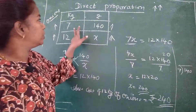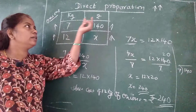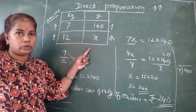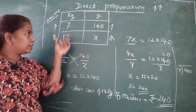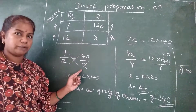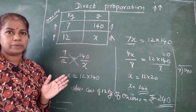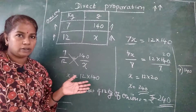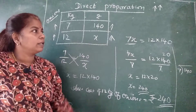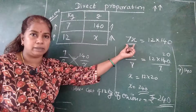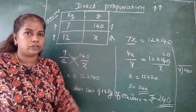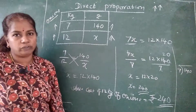What I did: first I made a table with columns for kg and rupees — 7 kg, 140 rupees, 12 kg, x. Then we wrote as it is because it is direct proportion: 7 upon 12 equals 140 upon x. Then cross multiplication: 7x equals 12 into 140. Here it is multiplication, so opposite is division: 7x upon 7 equals 12 into 140 upon 7. We cancelled and got the answer as 240.